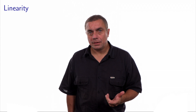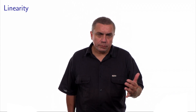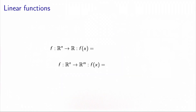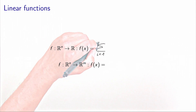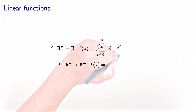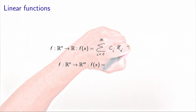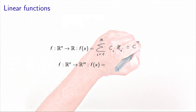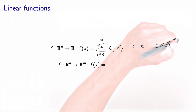In optimization, a great deal of simplification comes if the function is linear. And when it is not, the level of difficulty depends on the type of non-linearity. We say that a function from R^n to R is linear if it can be written as a linear combination of the variables — specifically, the inner product between a constant vector c and the vector of decision variables x.